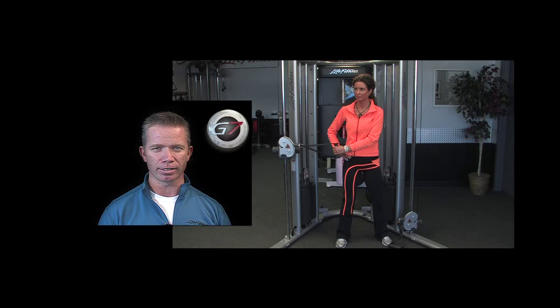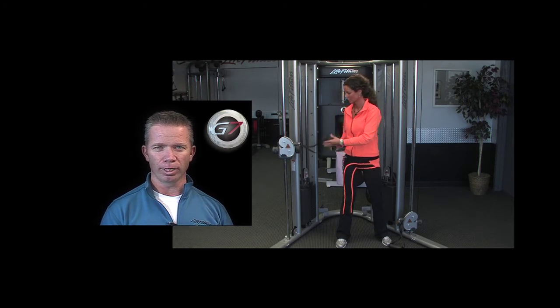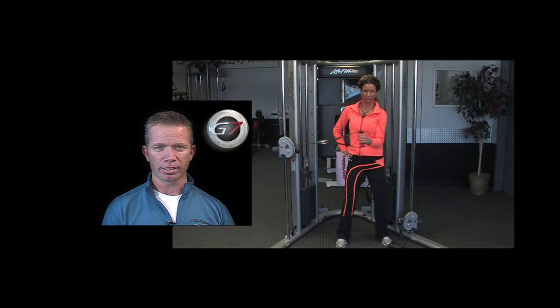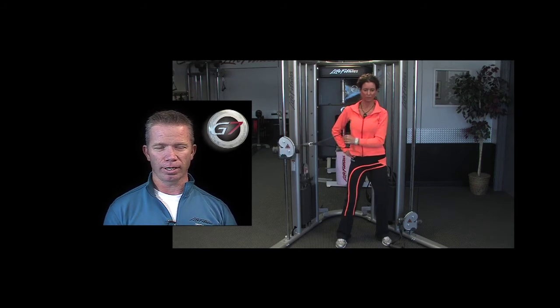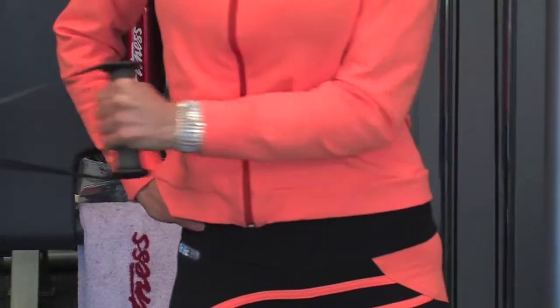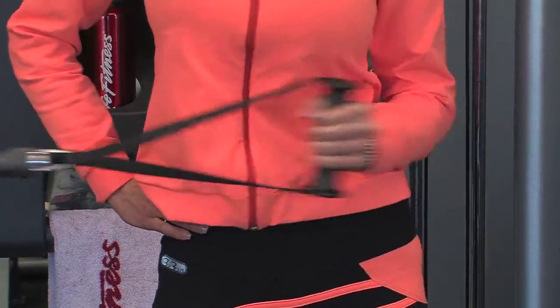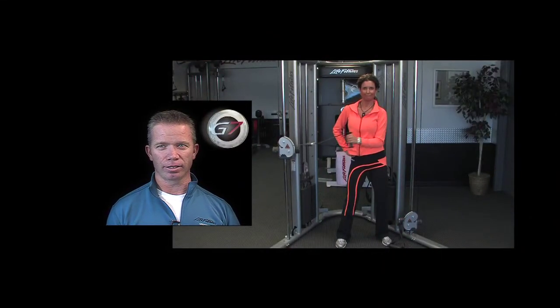So we're going to do a rotator cuff exercise. Go ahead and grab the pulley with one hand. And just a simple rotation, keeping your elbow locked into the side of your body and twist the hand outwards. So just right up against my hip? Yep. Keep that elbow tucked right into the hip, right into the side. And all you're doing is hinging along the elbow joint.